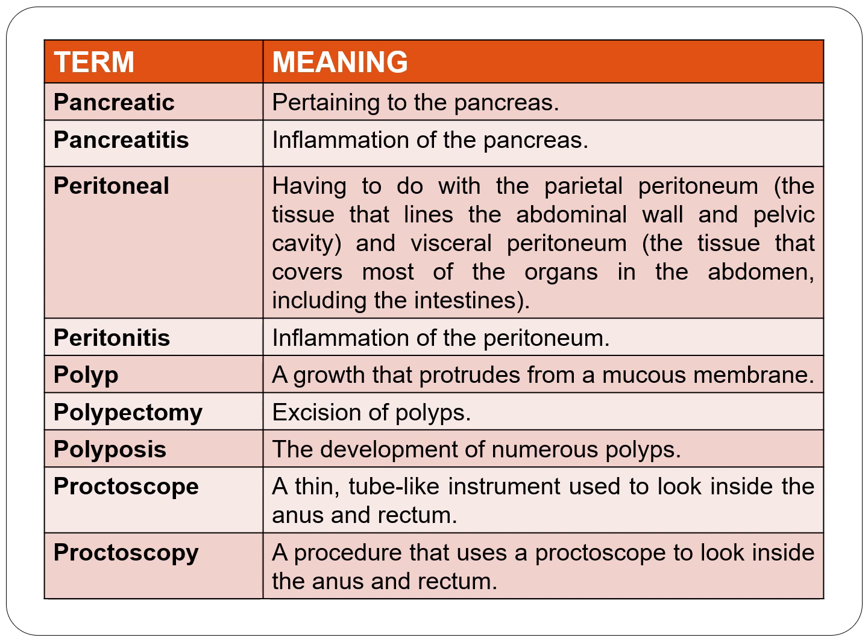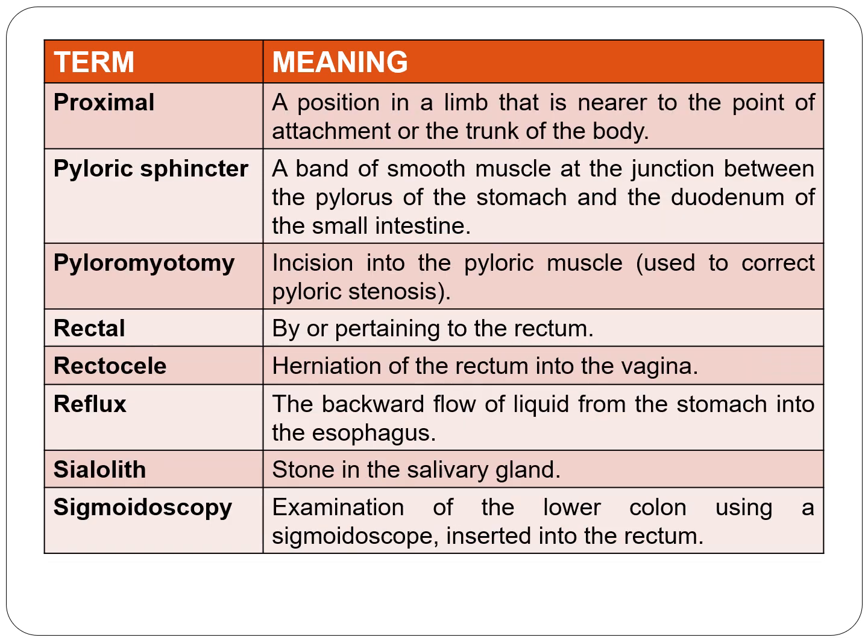A proctoscope — 'proct' relates to the anus — is a thin tube-like instrument used to look inside the anus and rectum, whereas proctoscopy is a procedure that uses a proctoscope to look inside the anus and rectum. Proximal means a position in the limb that is nearer to the point of attachment or trunk of the body, whereas distal means away from it.